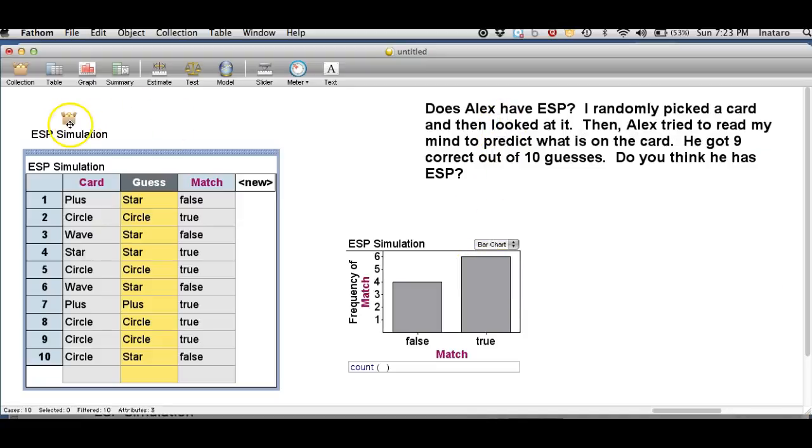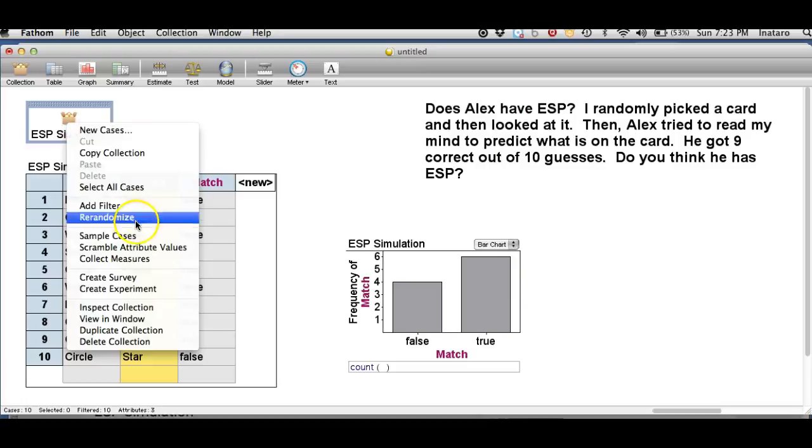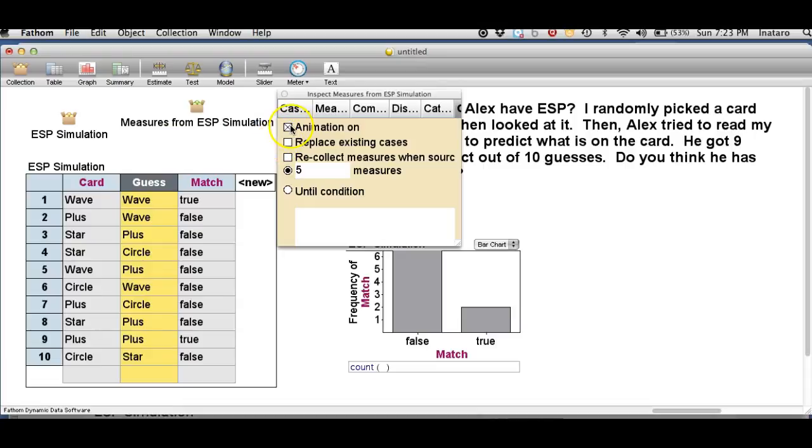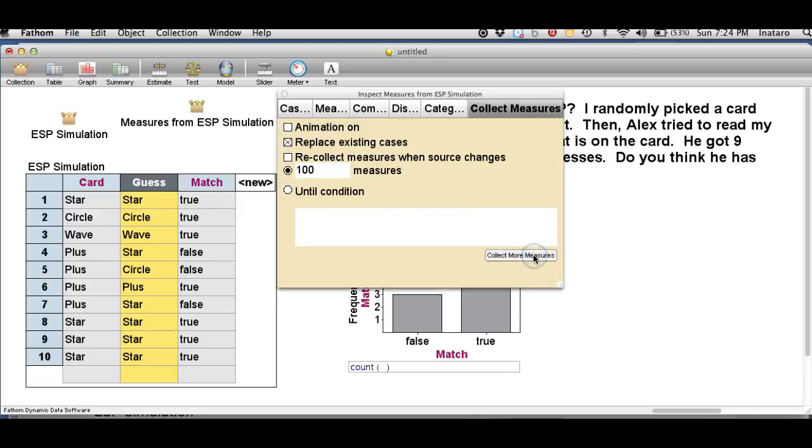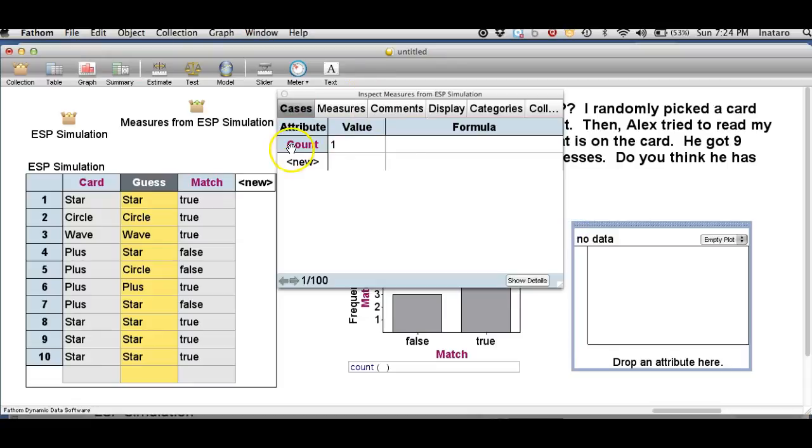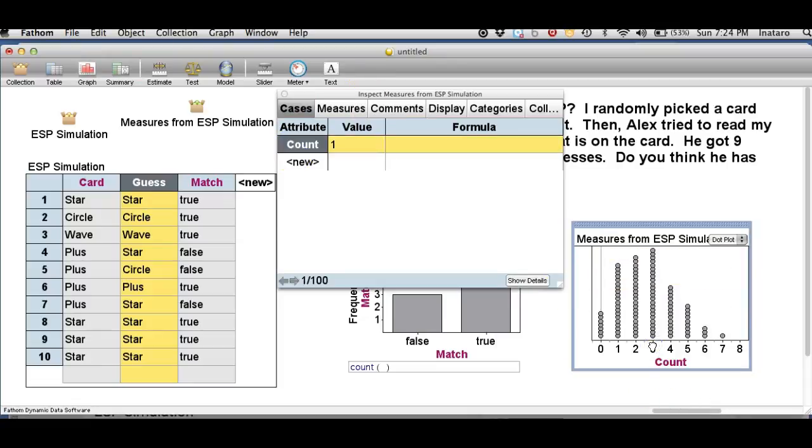Let's have Fathom gather the measures for us. I really don't want five runs of my simulation, I'd rather have a hundred. So let's collect a hundred measures and now let's take a look at a graph of those measures. One time there were seven correct by guessing, but at no time do we get nine correct by guessing.